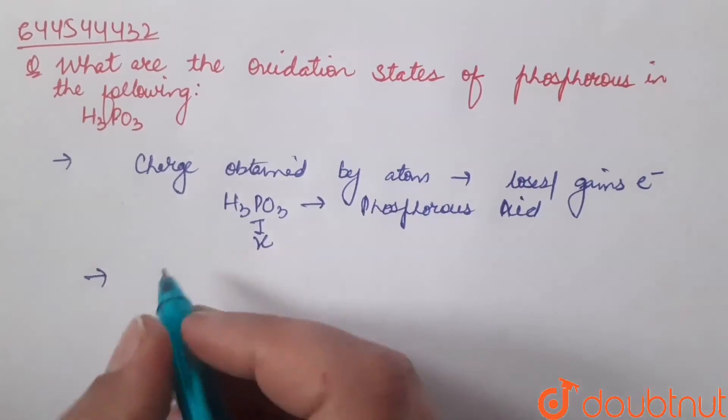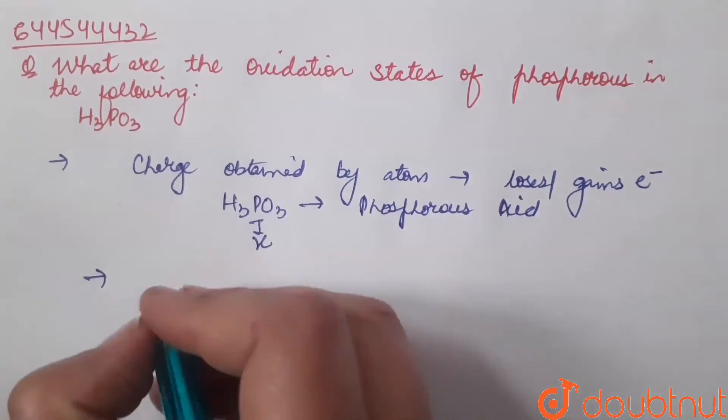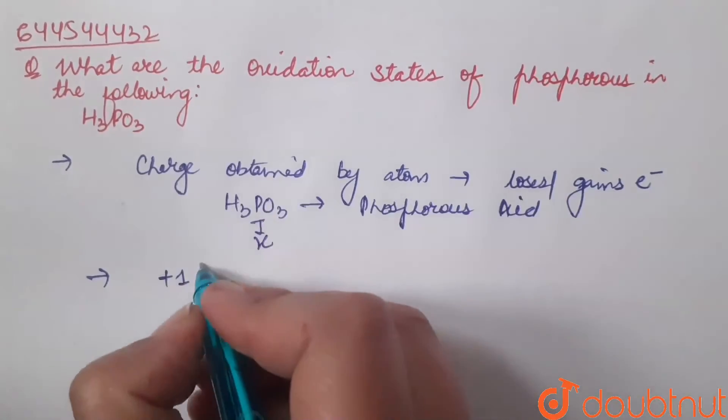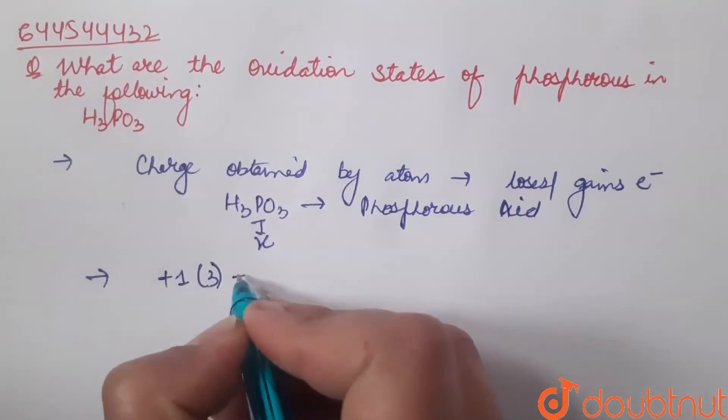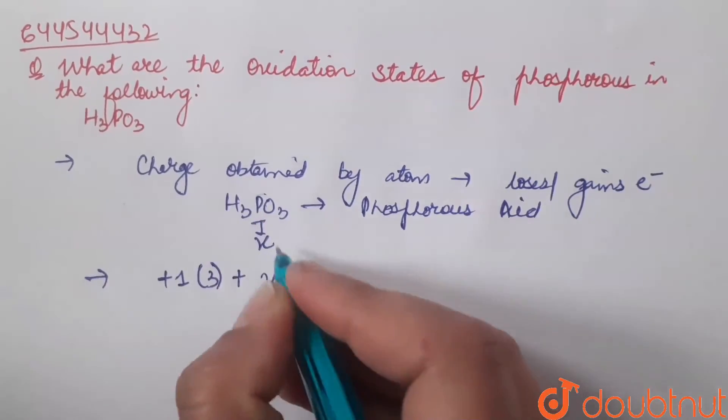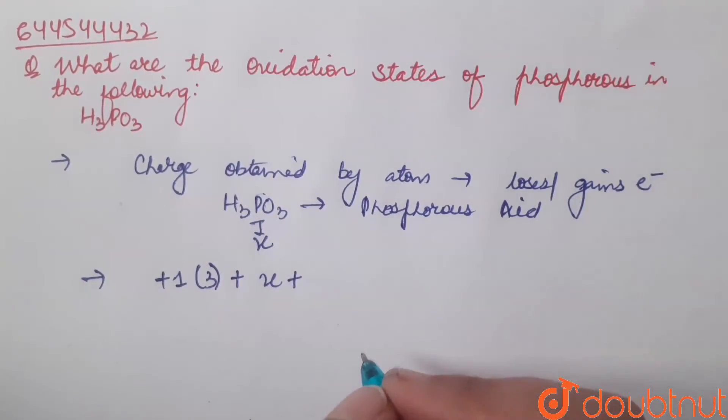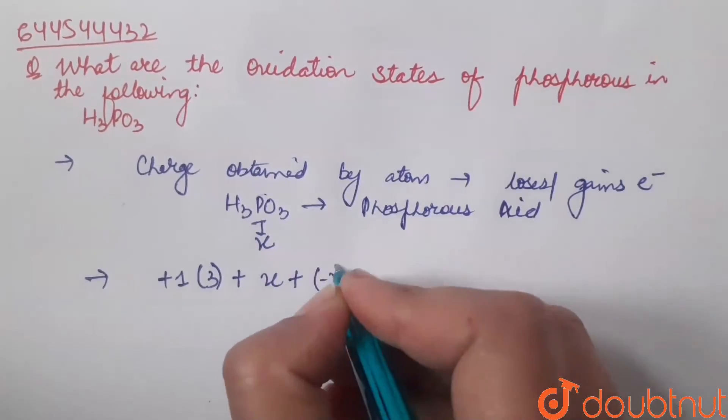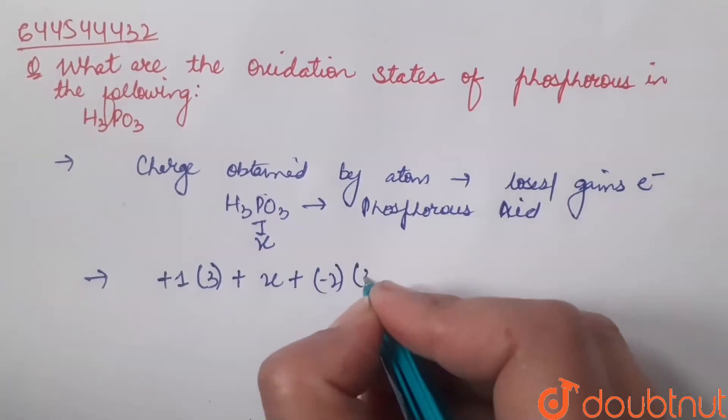So, oxidation state of hydrogen is plus 1, and here we have 3 hydrogen atoms, plus 1 multiplied by 3. Then, oxidation state of phosphorus is X. Then oxygen - oxidation state of oxygen is minus 2, and here we have 3 oxygen atoms, minus 2 multiplied by 3.